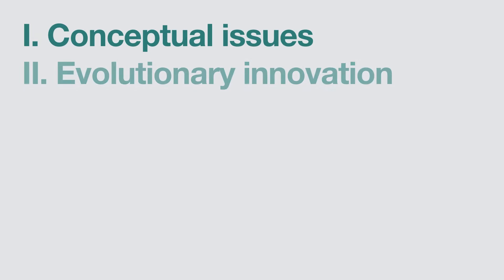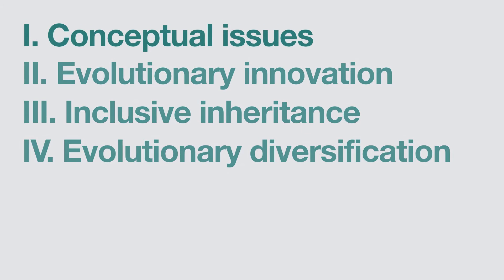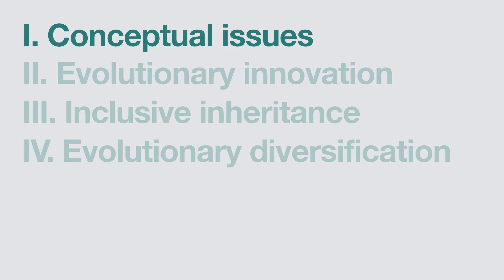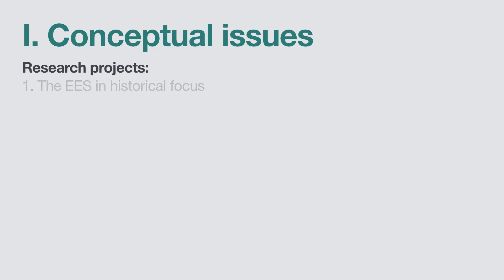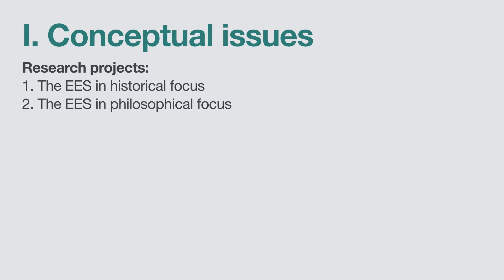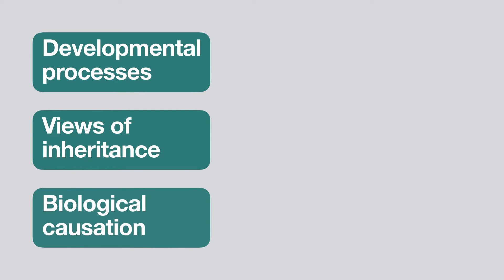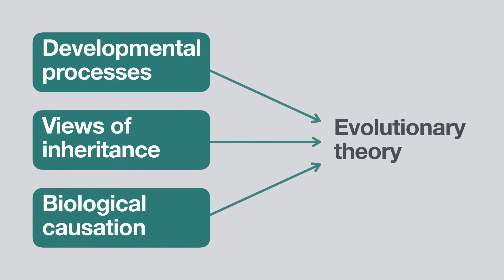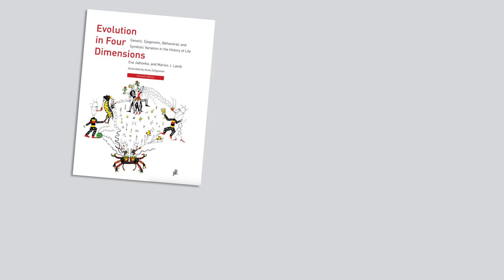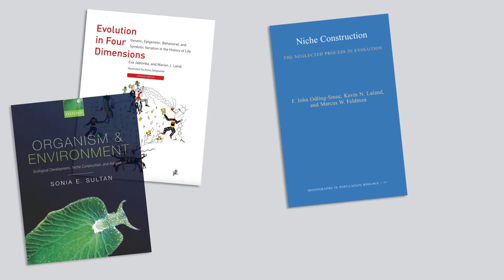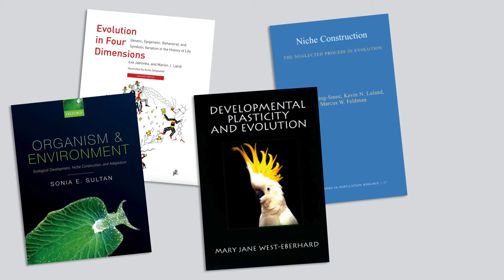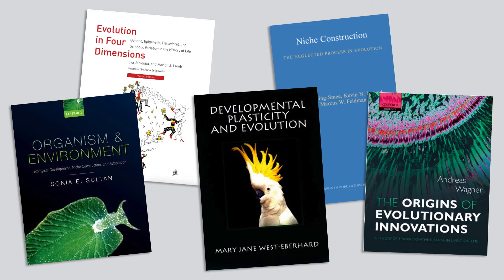The research is organised into four themes. The first theme, on conceptual issues, places the current discussions about the extended evolutionary synthesis in a historical and philosophical context. We assess how developmental processes and emerging views of inheritance and biological causation affect the structure of evolutionary theory and key evolutionary concepts such as fitness. Philosophers of science will bring increased awareness among biologists of how conceptual frameworks shape their own research.